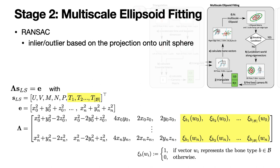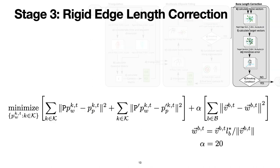We repeat this stage until the fitted ellipsoid is similar to a sphere. In the final stage, we simultaneously minimize the bone length variance and the reprojection error.